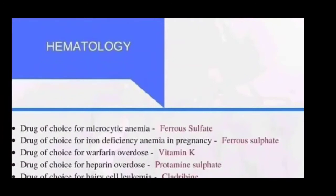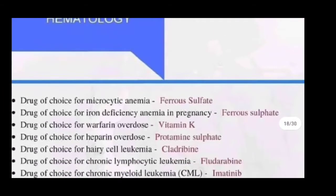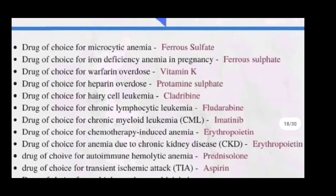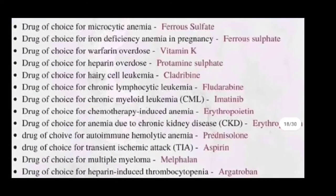Hello friends, welcome back with another video — drugs of choice series. Today we will discuss hematology drugs of choice. Let's get started. Drug of choice for microcytic anemia is ferrous sulfate. Drug of choice for iron deficiency anemia in pregnancy is ferrous sulfate.